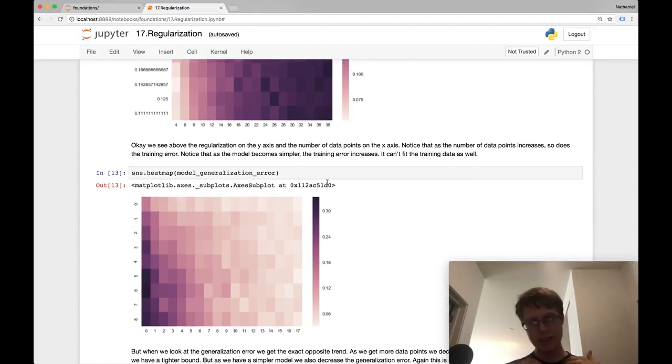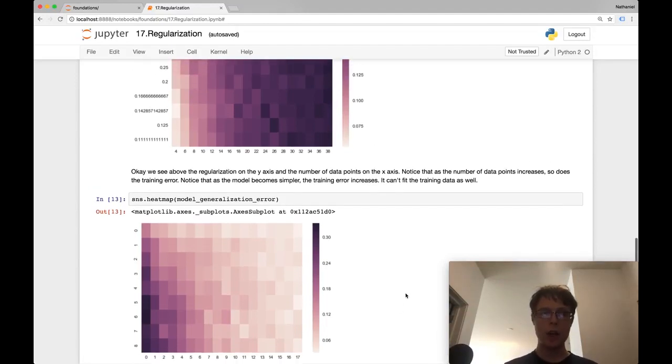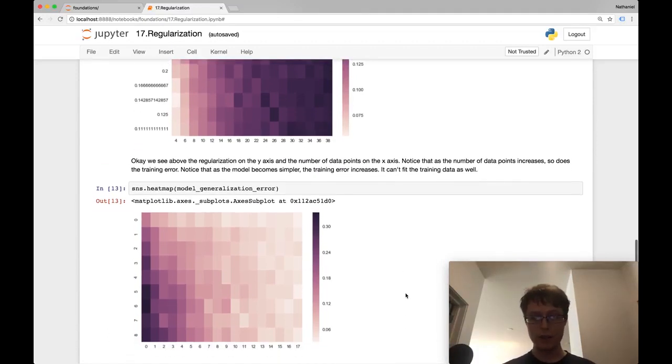We can now view the model generalization error and we see the exact opposite trend. This is the same thing we saw in the bias-variance trade-off. We're able to get more fine-tuned into what the actual model size is. These charts are now really quite smooth. We can really see what the surface of the bias-variance trade-off is.